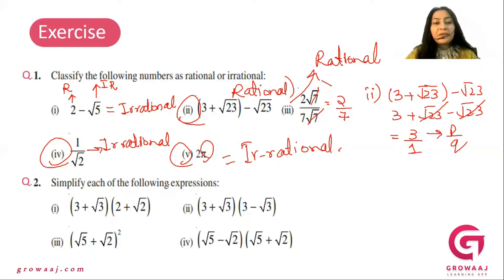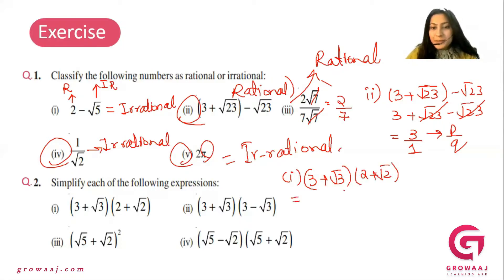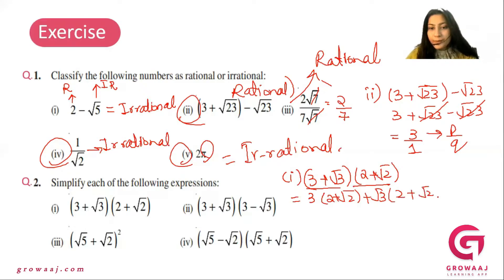Question number 2: simplify the following expressions. So for question number 2, part 1, we have 3 plus square root of 3 multiplied by 2 plus square root of 2. You multiply them out — 3 times 2 plus square root of 2 plus square root of 3 times 2 plus square root of 2.